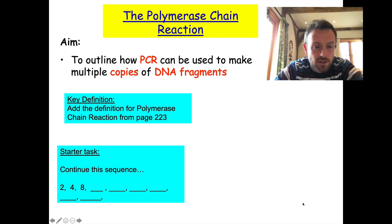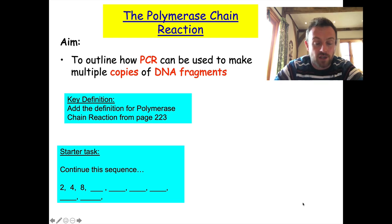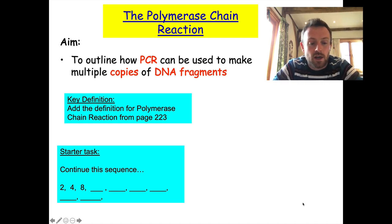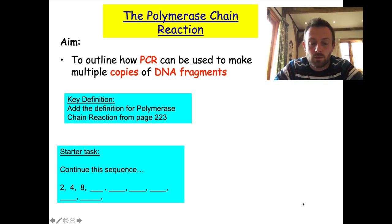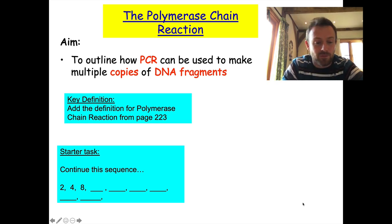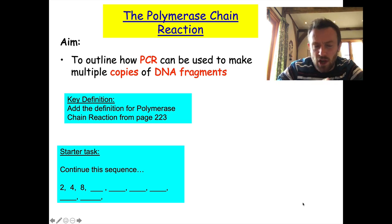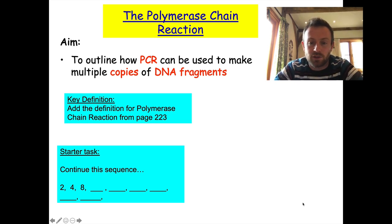The first few things I'd like you to do: first, add the definition for polymerase chain reaction from page 223 of your textbook, and also look at the sequence in the bottom left-hand corner and see if you can continue that sequence for six more values and tell me what type of sequence that is. Pause this video and come back when you've done those things.